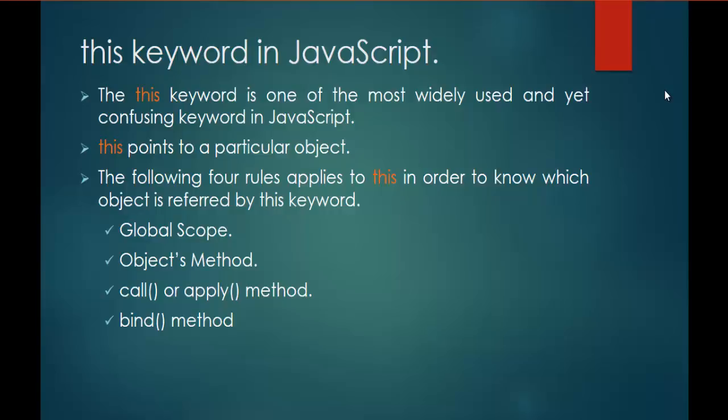The four rules are: Global Scope, Object's Method, Call or Apply Method, and the Bind Method. In this session, we are going to understand the first and foremost rule — the Global Scope relation with the 'this' keyword.